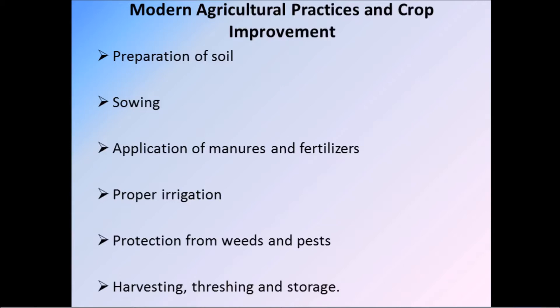It includes the preparation of soil, sowing, application of manures and fertilizers, proper irrigation, protection from weeds and pests, harvesting, threshing and storage. So to improve the cultivation of plants we need modern agricultural practices.